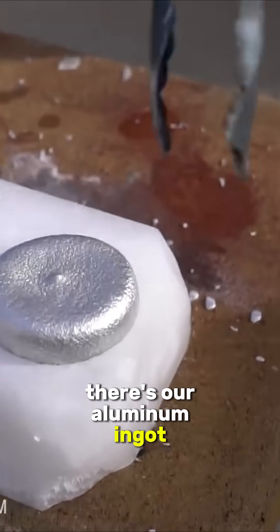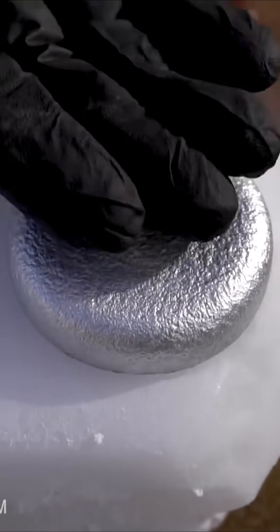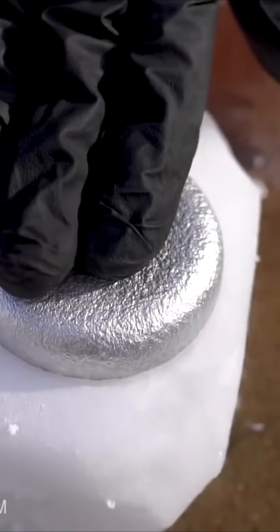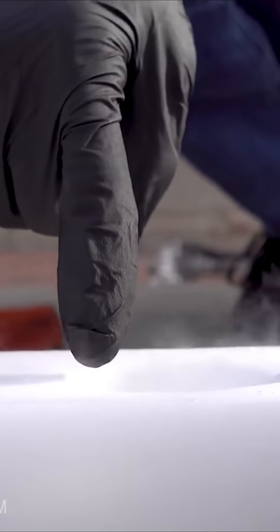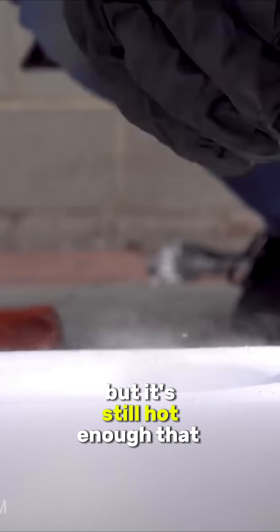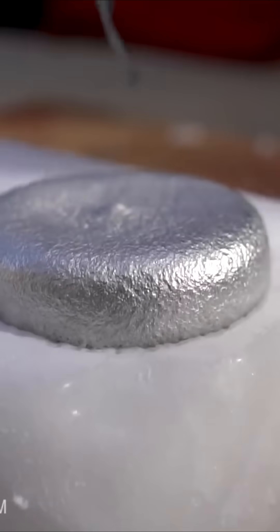There's our aluminum ingot that we've now cast in dry ice. Still very toasty. It's been sitting in the dry ice for several minutes, but it's still hot enough that it's not safe to touch. You can actually see that it's starting to bury its way into the block of dry ice too.